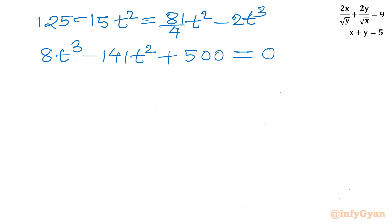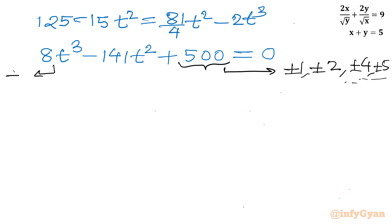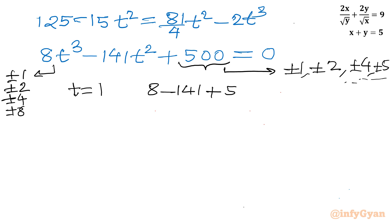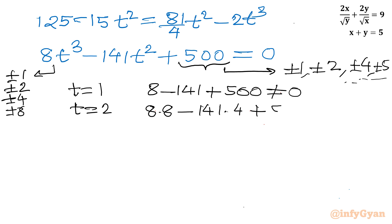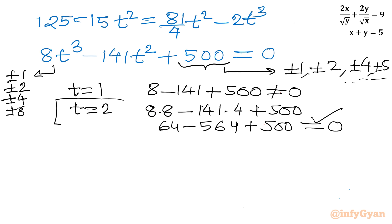I will use the Rational Root Theorem and Synthetic Division. Testing eligible factors of the constant term: plugging in t equals 1 gives 8 minus 141 plus 500, which does not equal zero. Testing t equals 2 gives 64 minus 564 plus 500 equals 0. Yes, t equals 2 is a root.